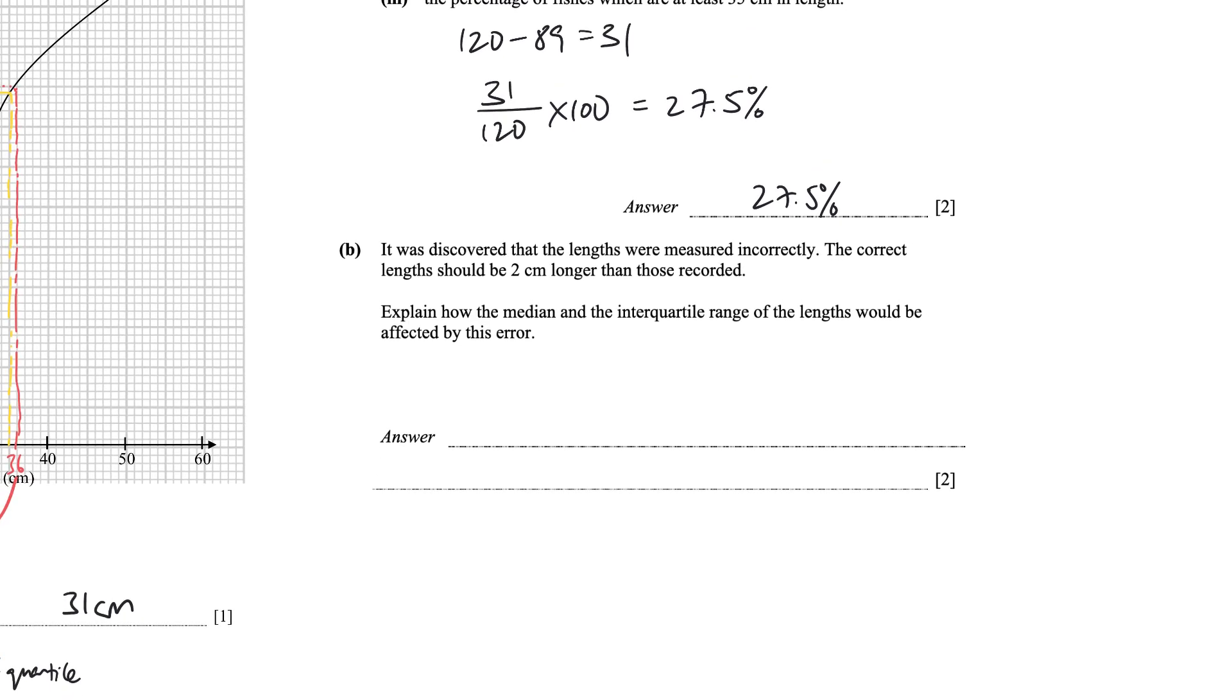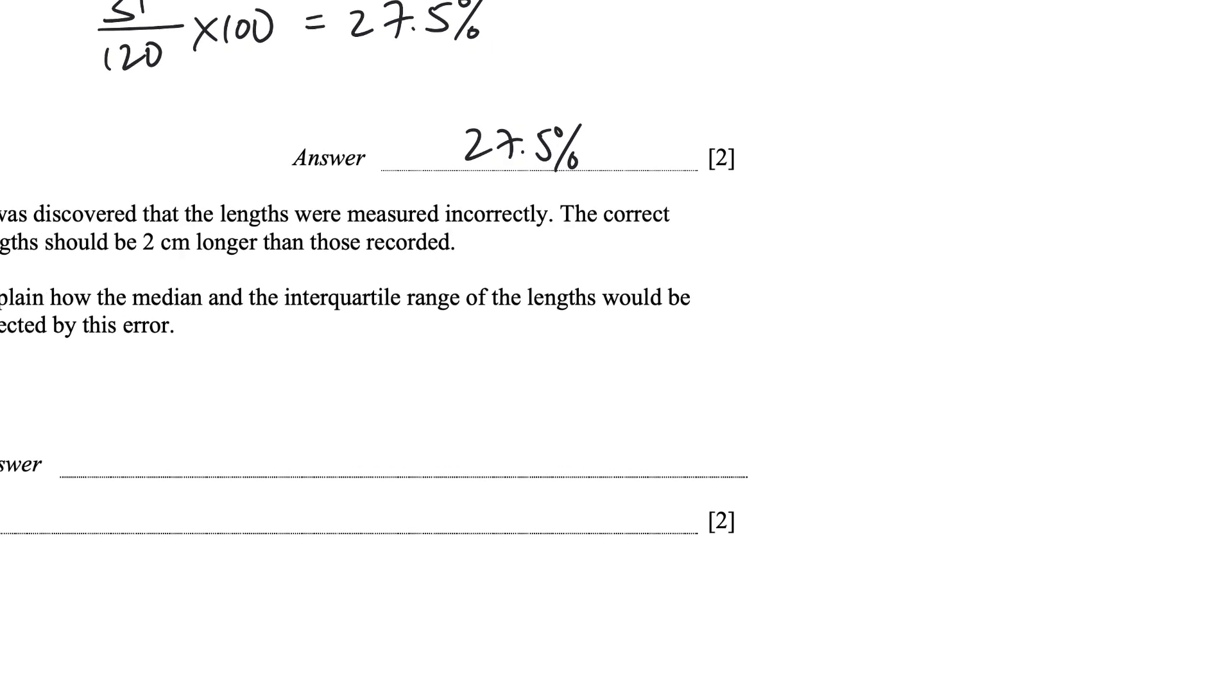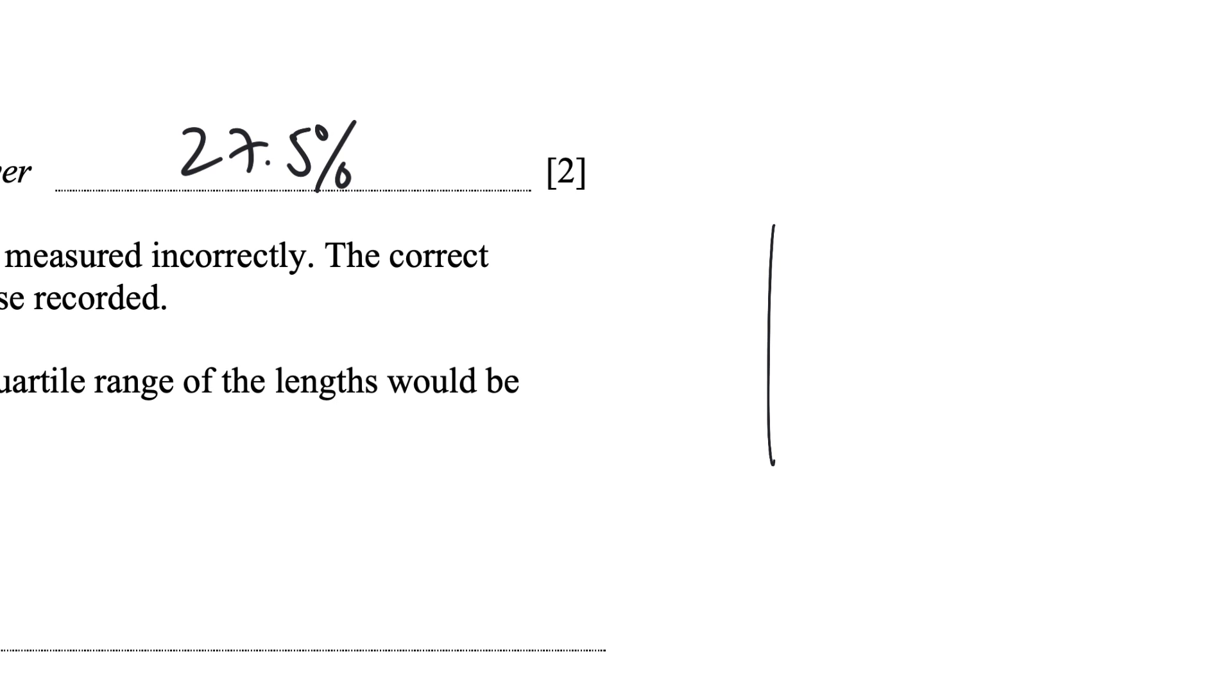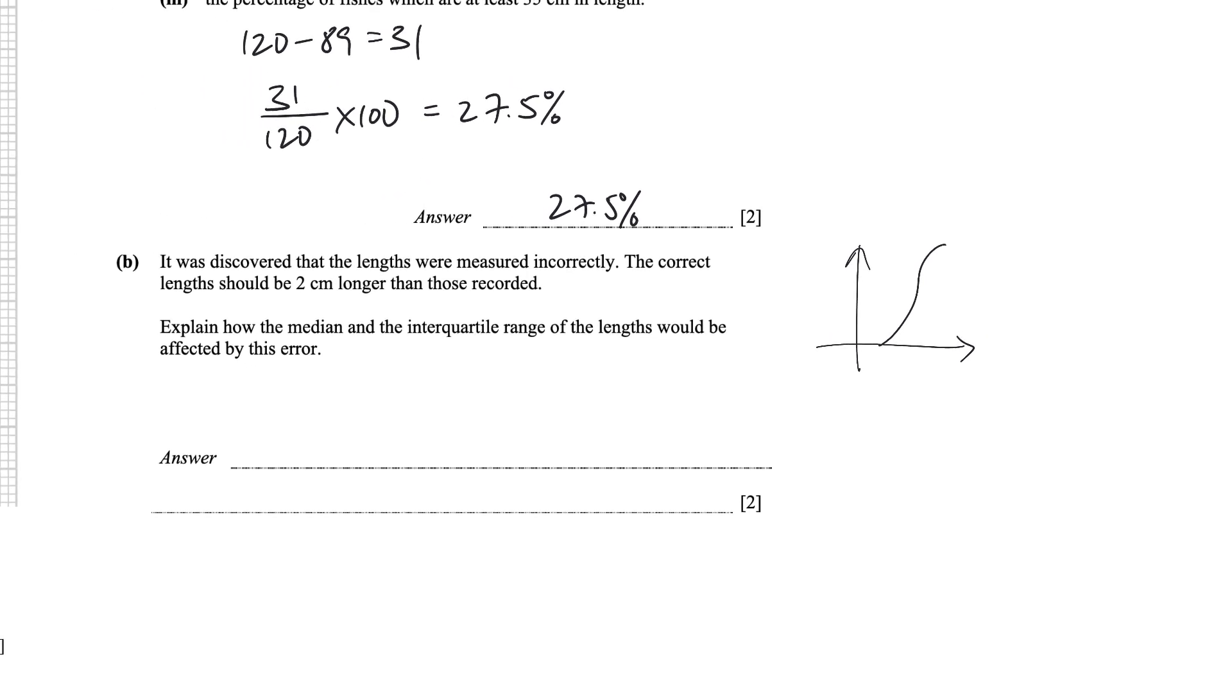It was discovered that the lengths were measured incorrectly. The correct lengths should be 2 cm longer, so everyone, all the fishes should be 2 cm longer. How would the median interquartile range of the lengths be affected? So first let's just think about it using the curve.